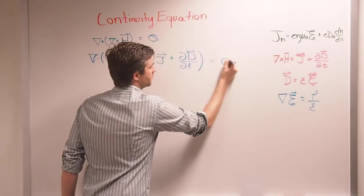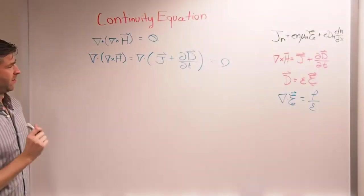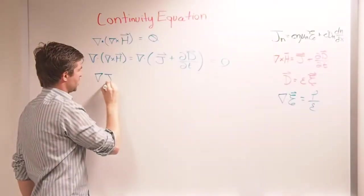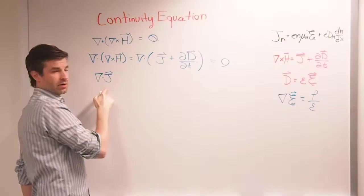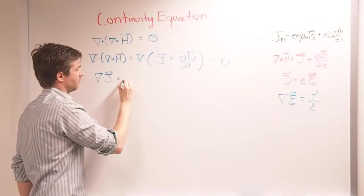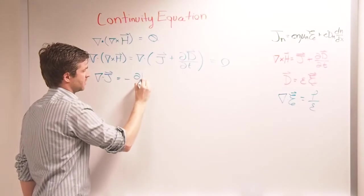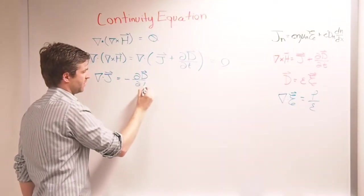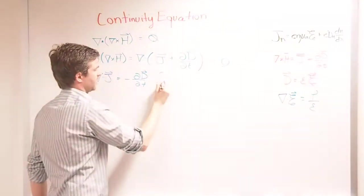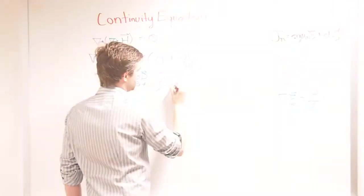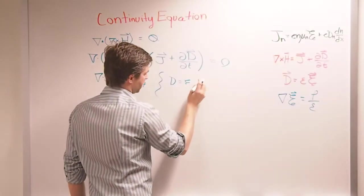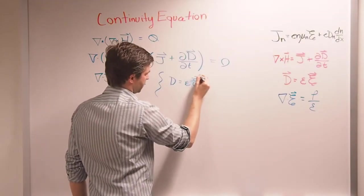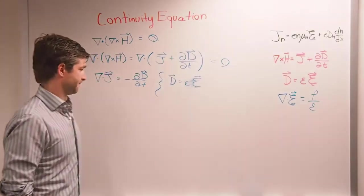That left-hand side is equal to zero, because the divergence of a curl is always zero. So what I have is: del dot J, our current density, is equal to the negative of del dot D (electric flux density) over dT. And we know that electric flux density D is equal to epsilon times the electric field E.